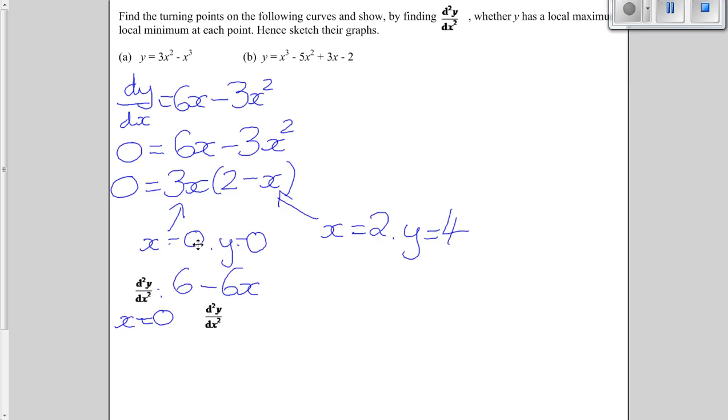Then this thing is going to be 6 take away 0, which is just 6, isn't it? Now that's positive. Now because it's positive, that means this is a minimum at this point. At 0, 0, we're going to have a minimum.